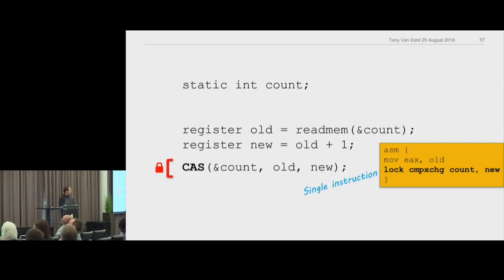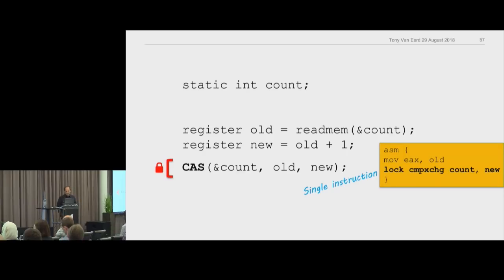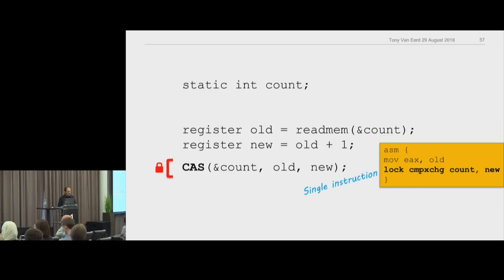That single instruction can't be interrupted, so it does the test of 'has it changed?' and the set all atomically — that's why it's called atomics, an atomic operation that can't be separated. A 'lock' does show up in the assembly, but that's not a normal lock — it's more like a lock on the cache line, not a blocking lock in the traditional sense.